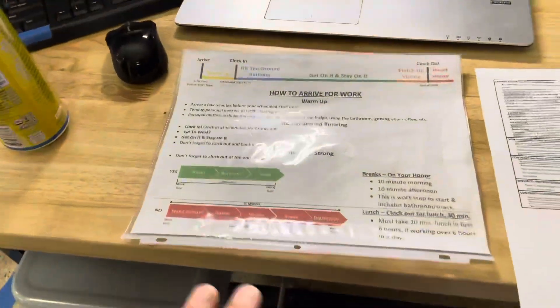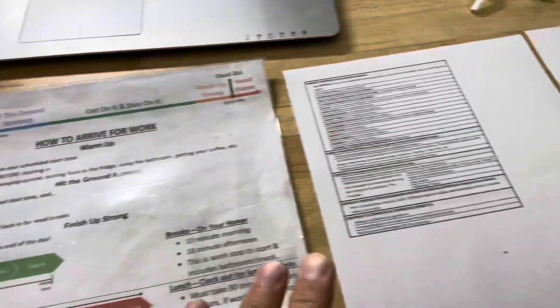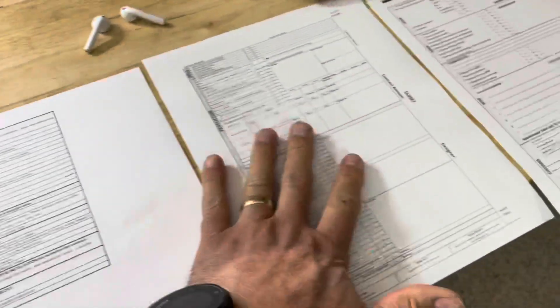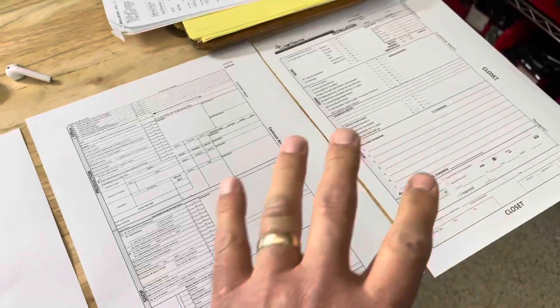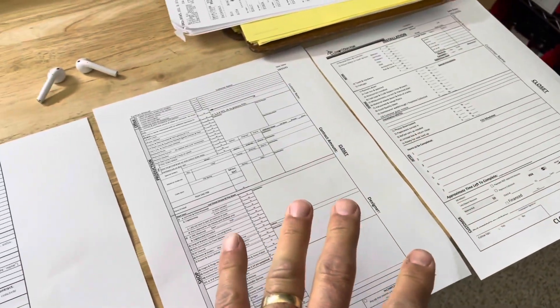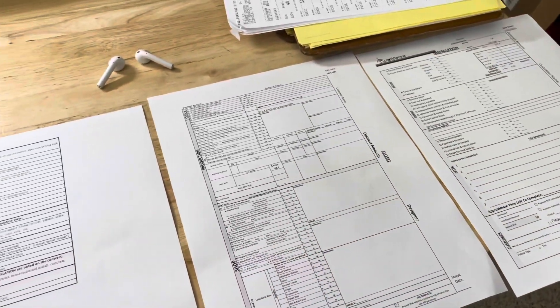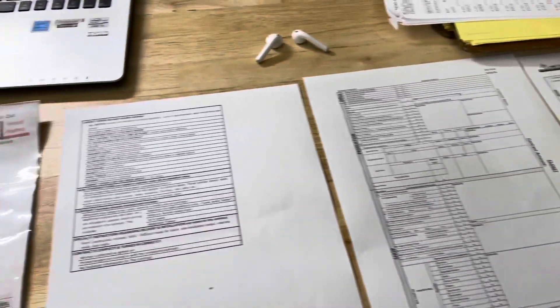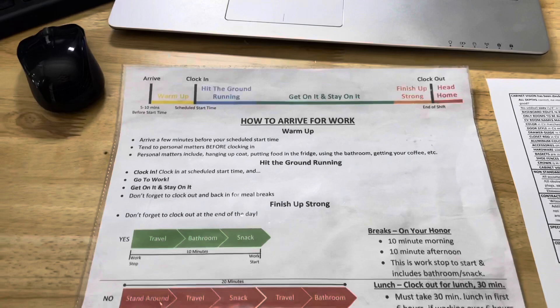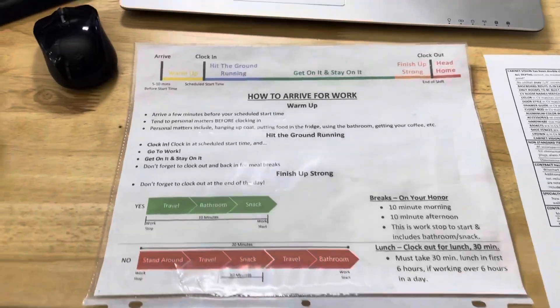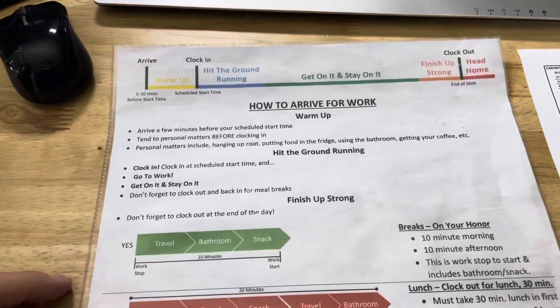Let me show you what we do. The first thing I want to go over is some checklists that we've got here. The first thing I want to tell you is that you have to set standards for things and write stuff down.